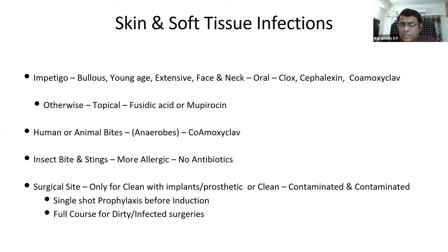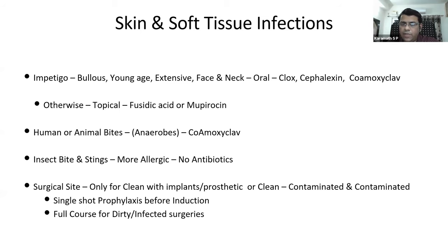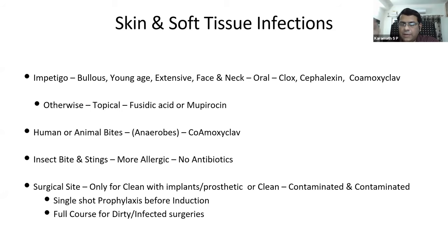For surgical site prophylaxis: antibiotic prophylaxis is indicated for clean surgery with implants or prosthetics, clean-contaminated surgery (involving the alimentary or GI tract), and contaminated surgery (obvious spillage of peritoneal contents). A single dose before induction is sufficient for these categories. For dirty or infected surgery where pus is encountered, a full antibiotic course is required.